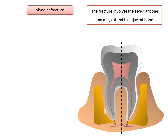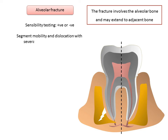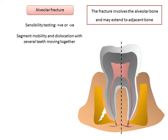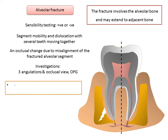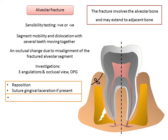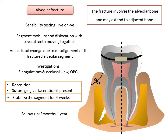Alveolar fracture: sensibility testing may or may not be positive. Segment mobility, discoloration, and several teeth moving together are common findings. Occlusal changes occur due to misalignment of the fractured alveolar segment. Fracture lines may be located at any level from the marginal bone to the root apex. In addition to three angulations and occlusal film, a panoramic radiograph (OPG) can help determine fracture course and position. Management involves repositioning the displaced segment, splinting, placing gingival sutures for lacerations, and stabilizing for about four weeks.